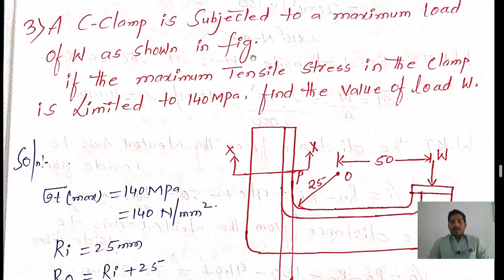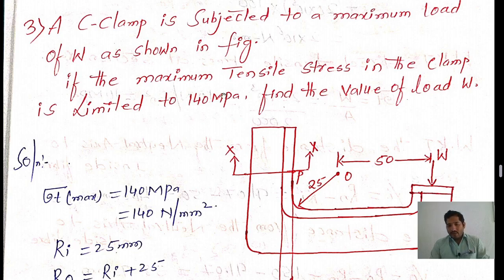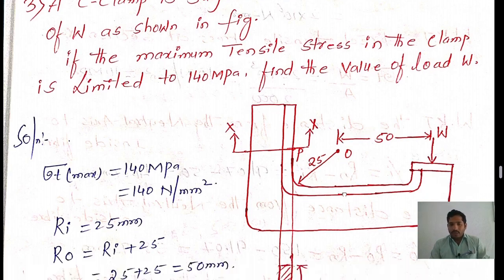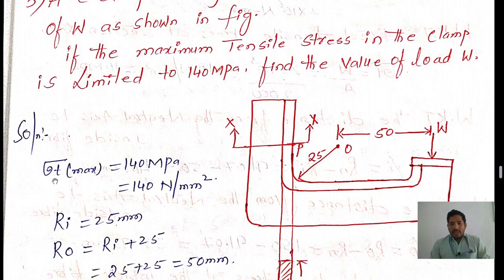A C-clamp is subjected to a maximum load of W. On this C-clamp the load W is acting. If the maximum tensile stress in the clamp is limited to 140 Megapascal, find the value of load W. In this problem our intention is to find out the value of load W.